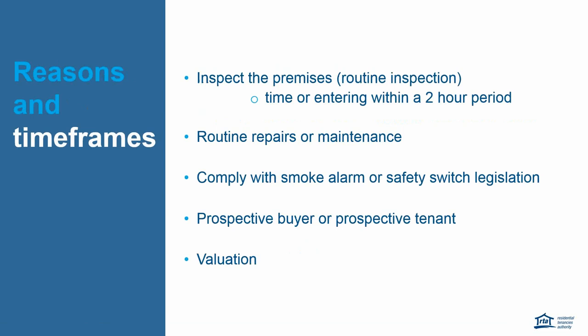Let's look at the reasons why you would want to enter a property and the notice period required. To inspect on a routine inspection you need to give a minimum of seven days' notice. You can enter at a specific time or within a two-hour period. For example, if I state I'm entering between 9 and 11, entry must occur during that time — I could still enter at five to 11, but not before 9 or after 11.